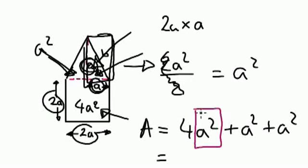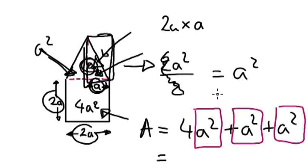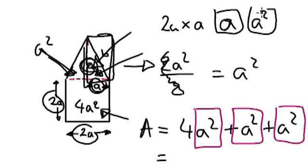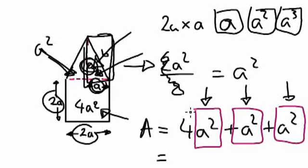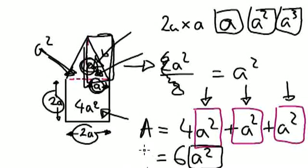Remember, a squared is one entity — it's like saying 4 ligers plus a liger plus a liger, which is 4 plus 1 plus 1 equals 6 ligers. So the formula for the area of this shape is 6a squared. It doesn't matter if you don't fully understand this yet, but just know it is possible to find the formula for the area of this shape.